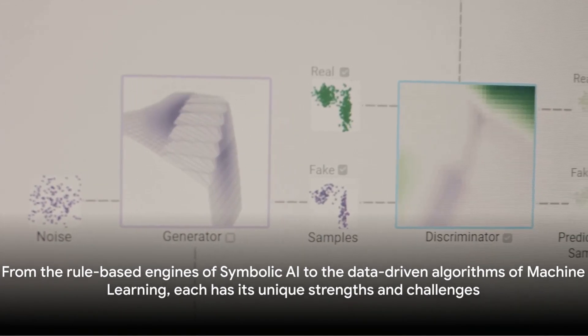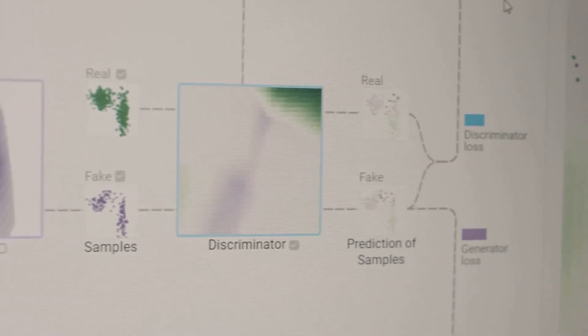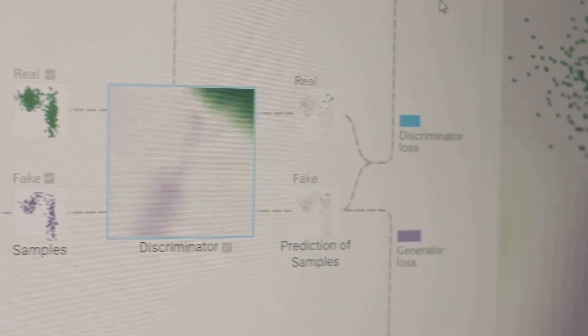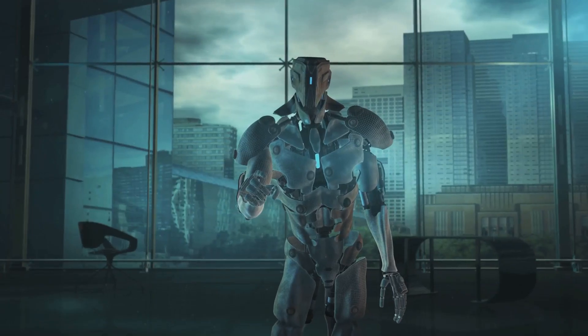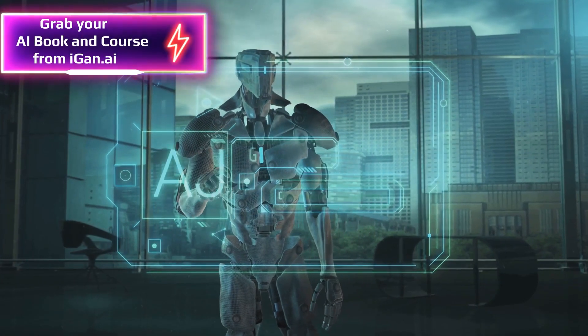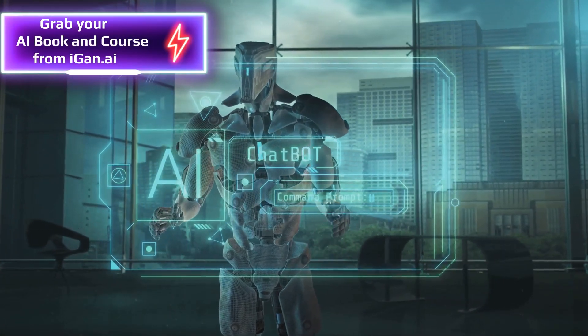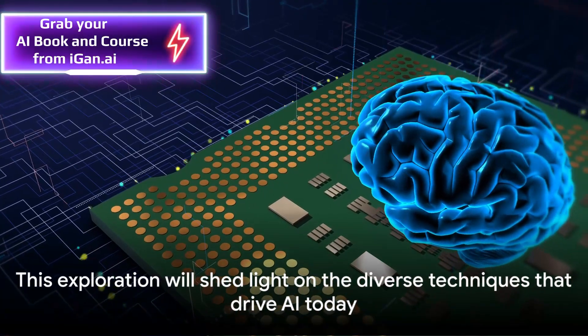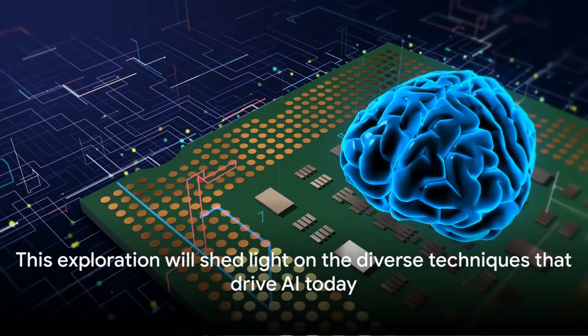In this video, we'll explore how these two branches of AI differ in their approach, applications, and implications. From the rule-based engines of symbolic AI to the data-driven algorithms of machine learning, each has its unique strengths and challenges.